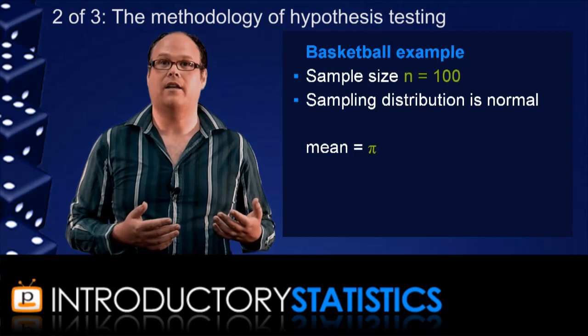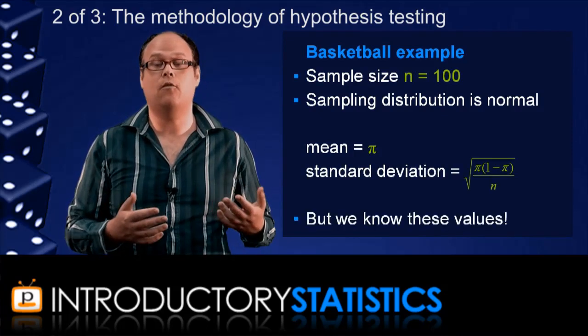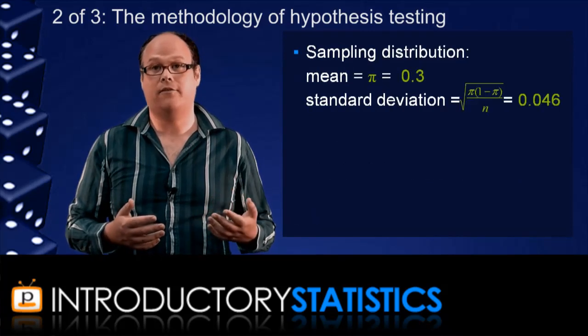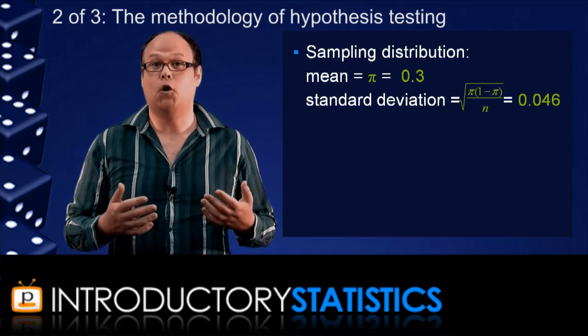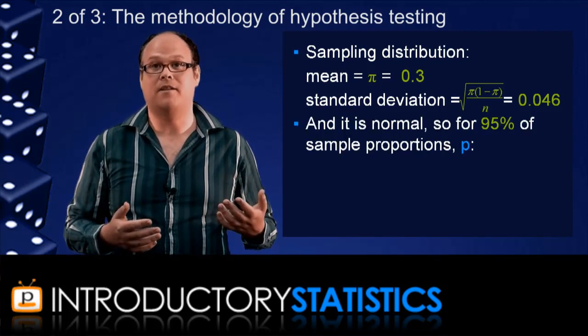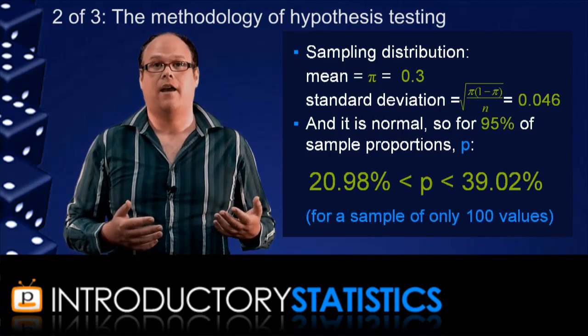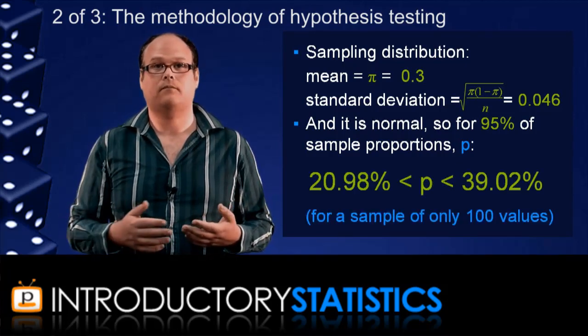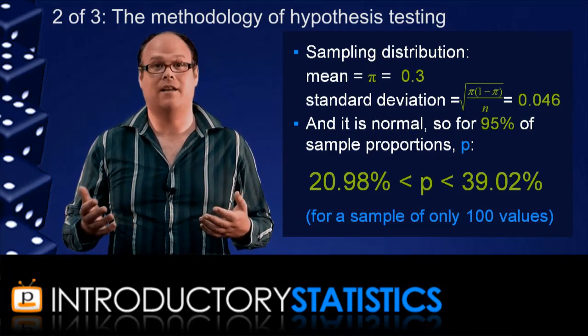We know that the sampling distribution of the proportion is approximately normal, with mean pi and standard deviation given here. But because we're assuming that the null hypothesis is true, we know all those numbers. In fact, the mean is 0.3 and the standard deviation is 0.046. And because the normal distribution acts so nicely, we can say things like 95% of all sample proportions will fall between 20.98% and 39.02%. So if we collect a sample and it isn't in that range, we'll reject the assumption.